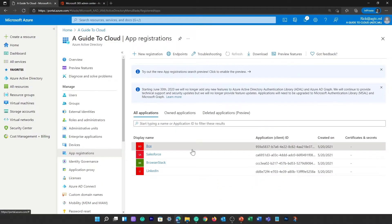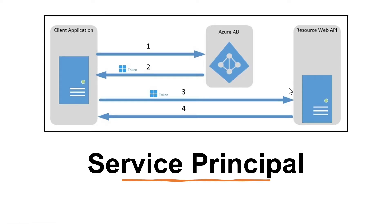A service principle is created in each tenant where the application is used, and references the globally unique object ID. The service principle defines what the app can do in the tenant, such as who can access the app and what resources the app can access.